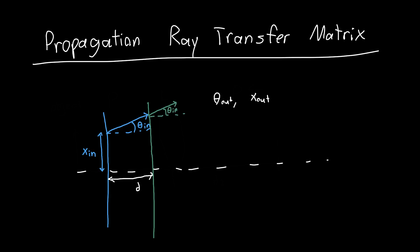So what is the new theta in? And what is the new x in? Well, we can just use simple geometry to figure this out. And so we see that, first of all, if the ray is just propagating in a straight line, as rays do, this angle isn't going to change. So theta out is just equal to theta in.